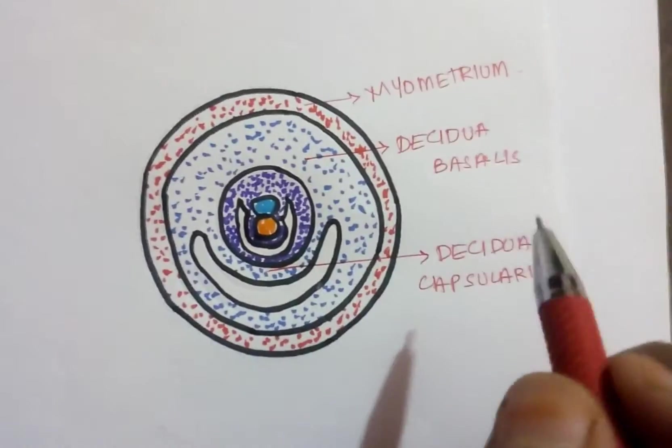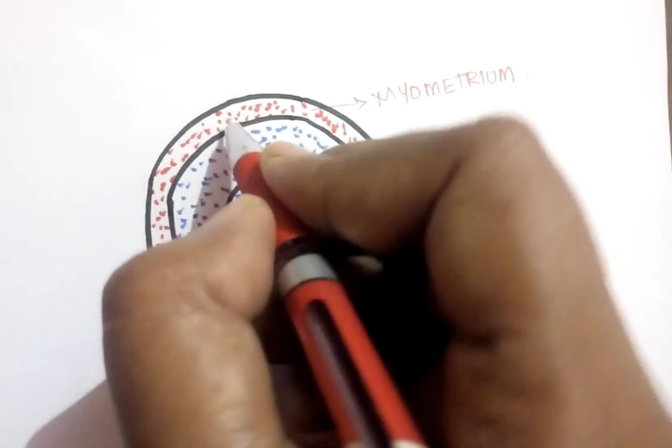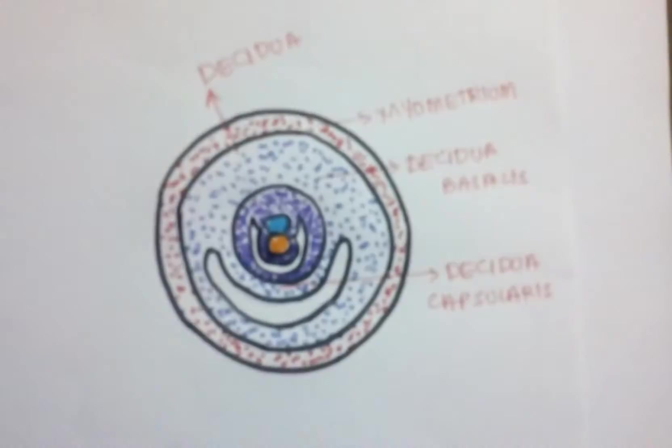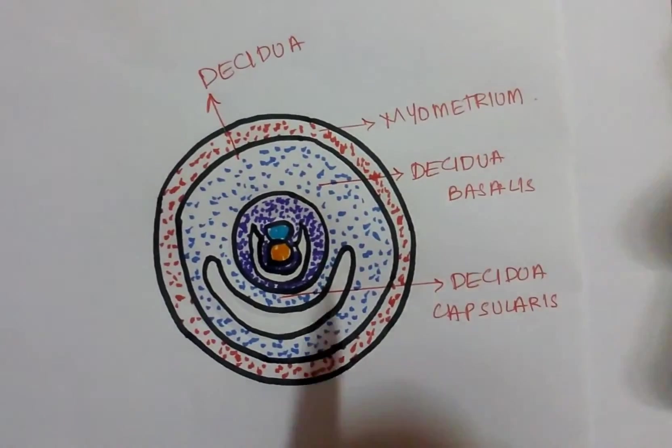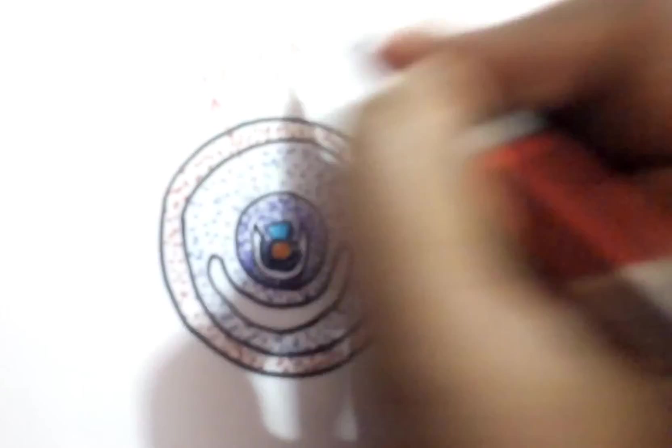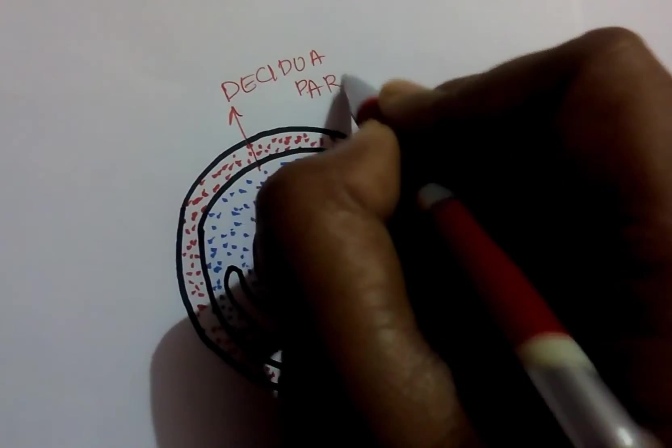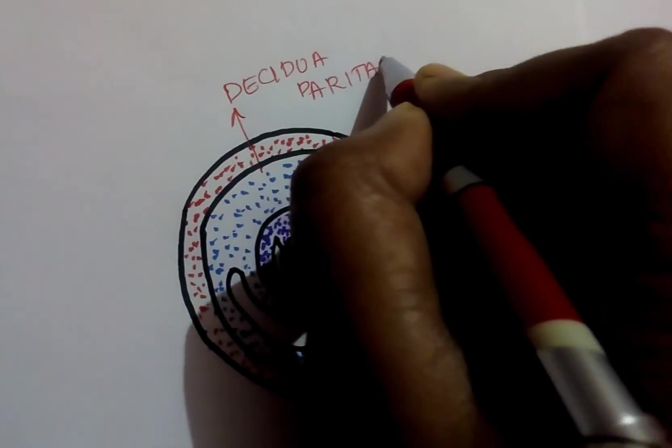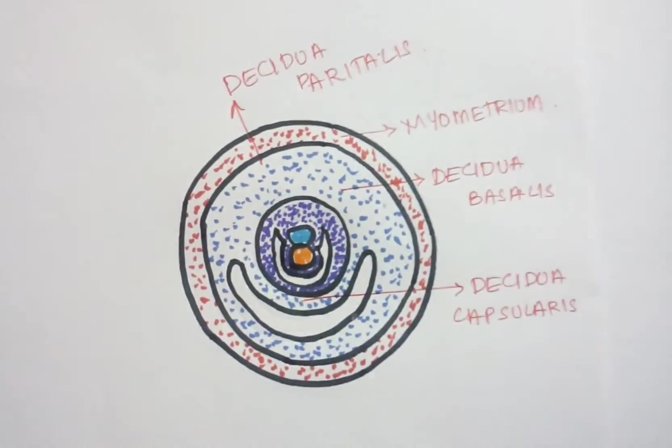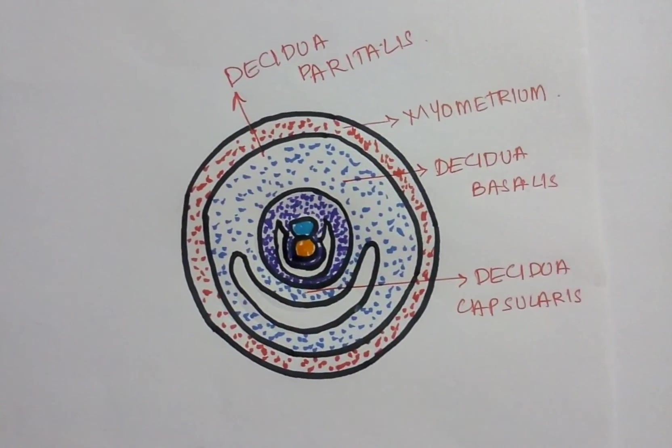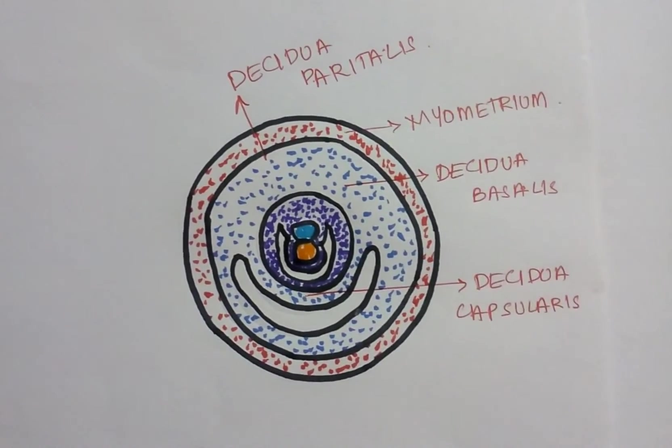And remaining part of endometrium, that is other than the decidua basalis and decidua capsularis, remaining part of decidua is called as decidua parietalis. Other than the decidua capsularis and decidua basalis, remaining part is called as decidua parietalis. This is about the decidua classification.